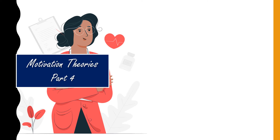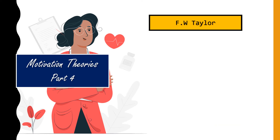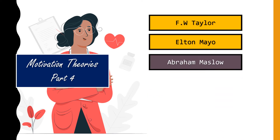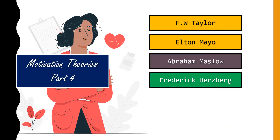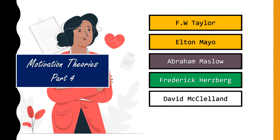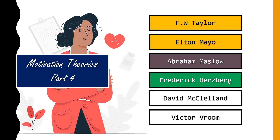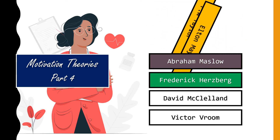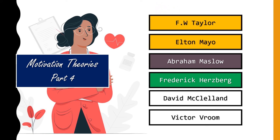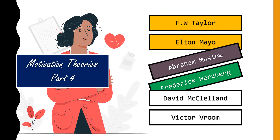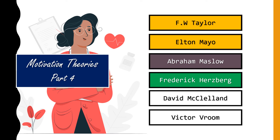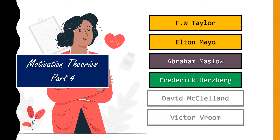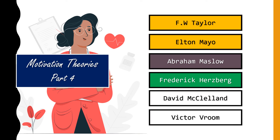We have six researchers: Taylor, Mayo, Maslow, Herzberg, McClellan, and Vroom. We covered Taylor and Mayo in part one, and Maslow and Herzberg in parts two and three. Today in part four we will talk about McClellan and Vroom.